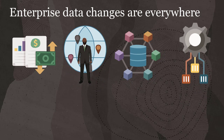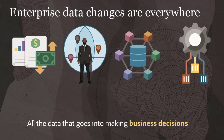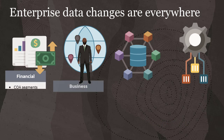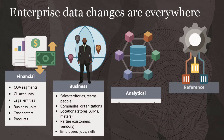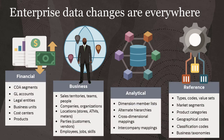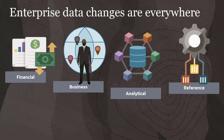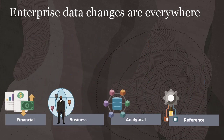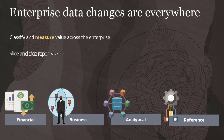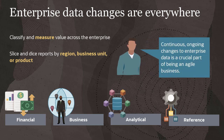Businesses run on enterprise data, which encompasses all the data that goes into making business decisions. It includes financial data, business data, analytical data, and reference data. It's what you use to classify and measure value across the enterprise, and what enables you to slice and dice reports by region, business unit, or product. Continuous, ongoing changes to enterprise data is a crucial part of being an agile business.